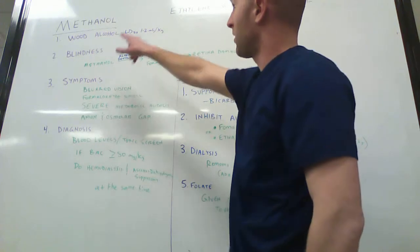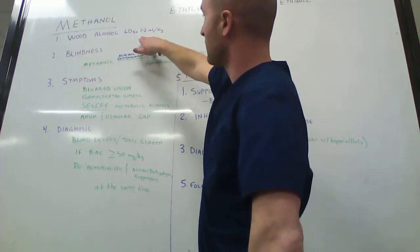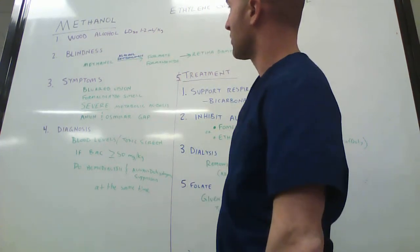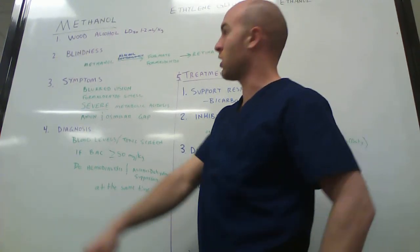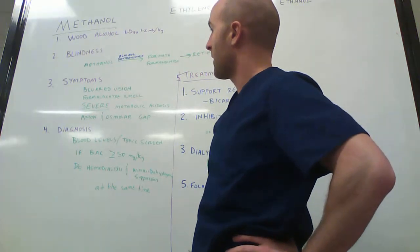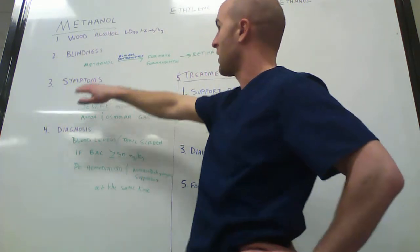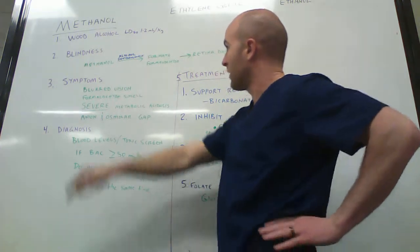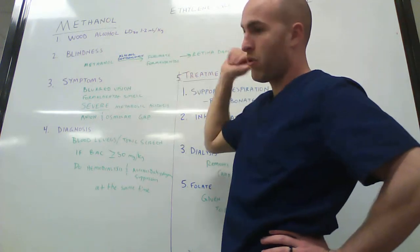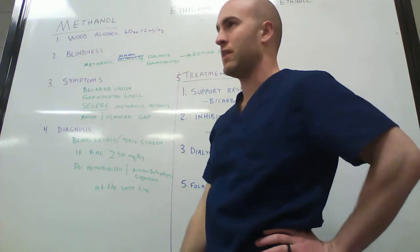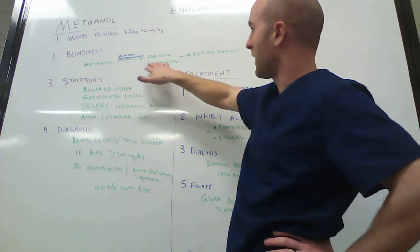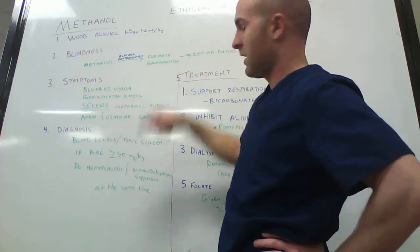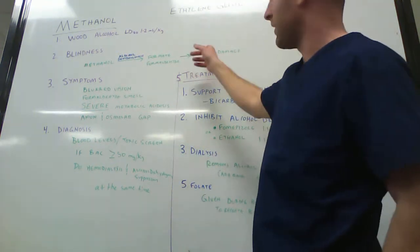Starting off with methanol, we understand that it's very toxic. It has a lethal dose, an LD50, of one to two milliliters per kilogram. One of the first important things to know about methanol is that it leads to blindness. The reason for this is because methanol, similar to ethanol, is broken down by alcohol dehydrogenase. But when methanol is broken down, rather than forming aldehyde, this one forms formaldehyde and formate. It's this formate that causes the retina damage and leads to blindness.